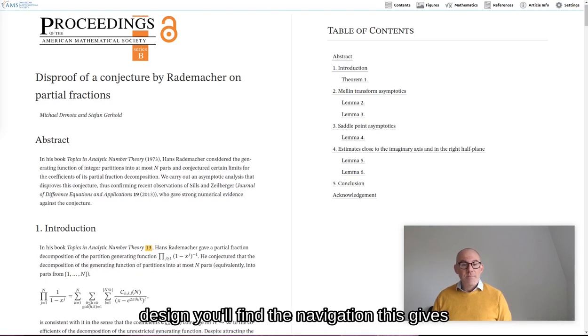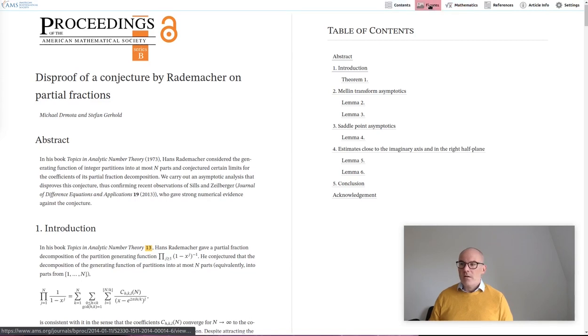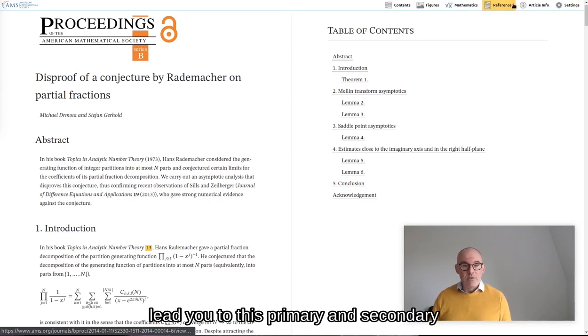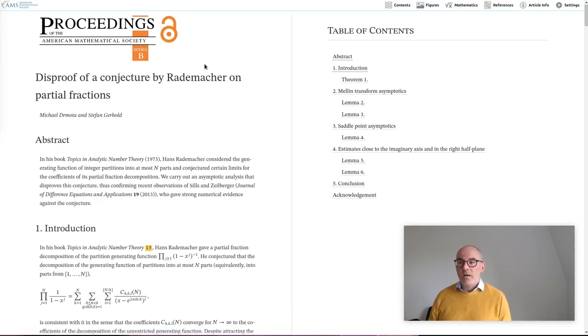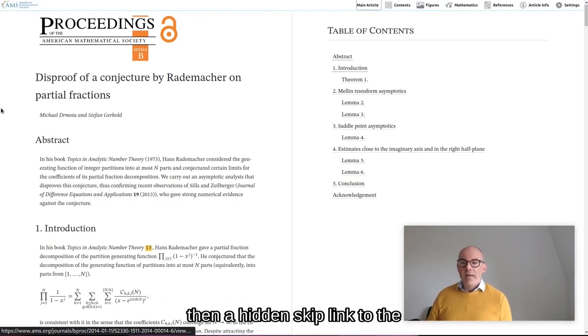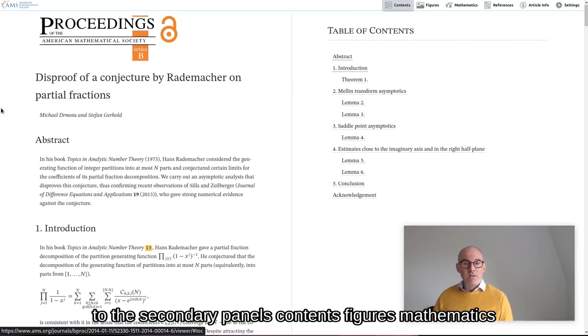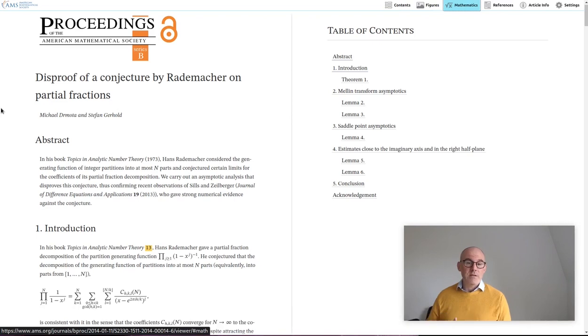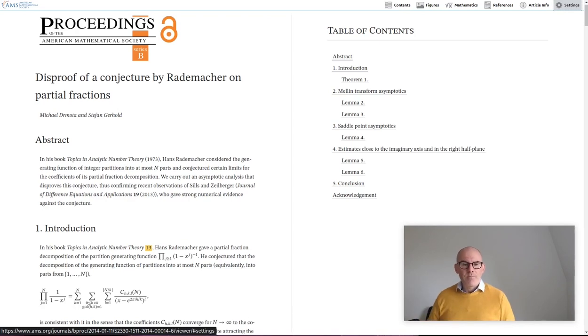At the top of our dual panel design, you find the navigation. This gives you access to the main parts of this display. The navigation links lead you to this primary and secondary panels. In this example, we have all possible secondary panels. We start with a link to the AMS homepage, then a hidden skip link to the main article content. Next, we have links to the secondary panels, contents, figures, mathematics, references, article information, and settings. We will go through these individually to give you an idea how they fit together.